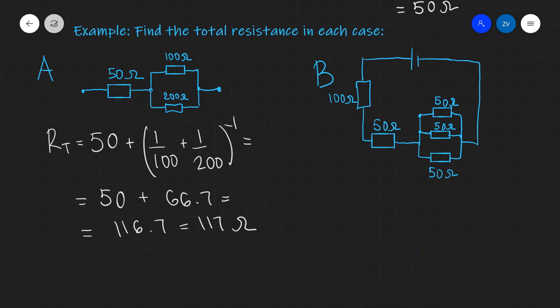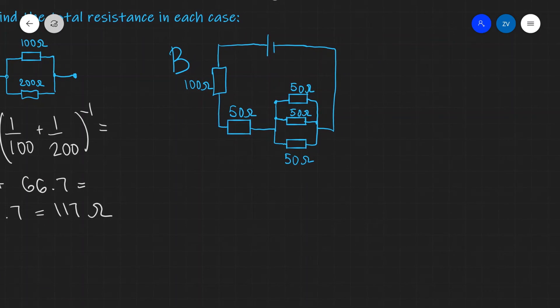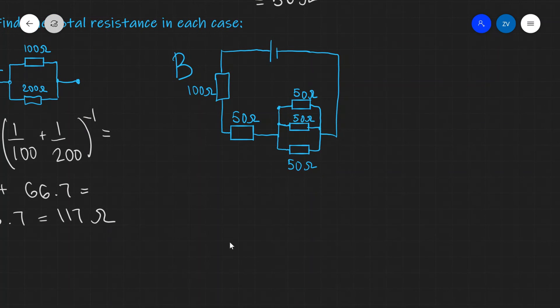Looking at the solution for the second question now. So here we have two resistors which are connected in series. So the total between those two will just be 100 plus 50. So I could just write this down.